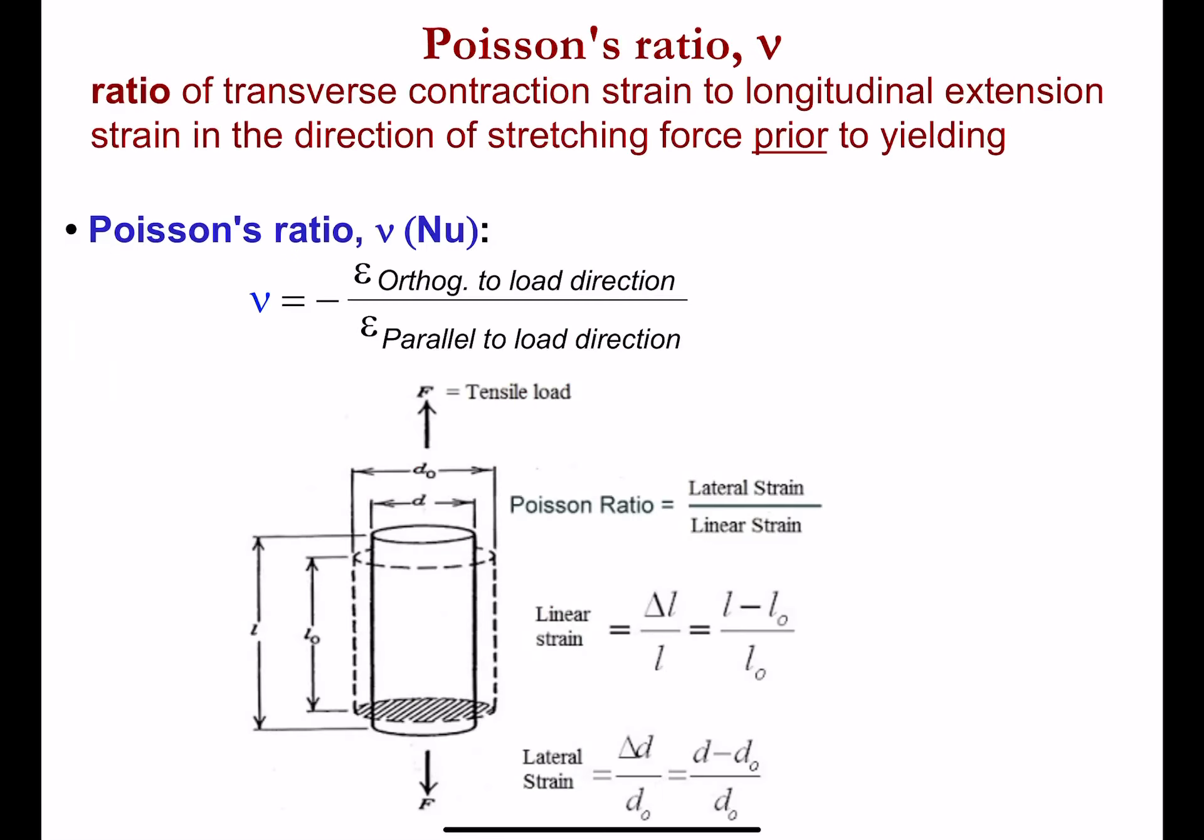Poisson's ratio is the ratio of the transverse contraction strain to the longitudinal extension strain, characterized prior to yielding or permanent deformation. We've seen the longitudinal extension strain before—that's simply our length at the moment of measurement minus the original length divided by the original length. We call that linear strain. The linear strain here is the epsilon that is parallel to the load direction. If we are applying tensional forces on the test specimen, this strain is along the vector of that force.